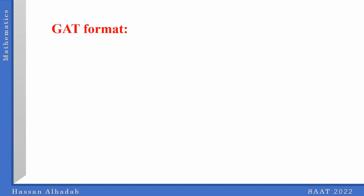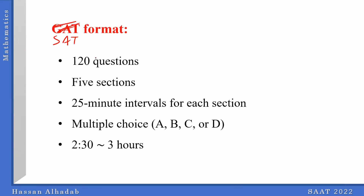If you have any questions, you can ask me. As for the SAAT, there are 120 questions across five sections, 25 minutes each section. If you divide 120 over five sections, that gives you 24 questions per section — about a minute each. Each section is a mix of math, physics, biology, and chemistry. All questions are multiple choice: A, B, C, D. And it takes up to three hours.